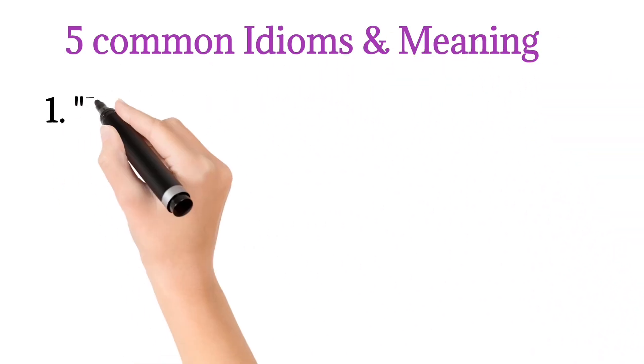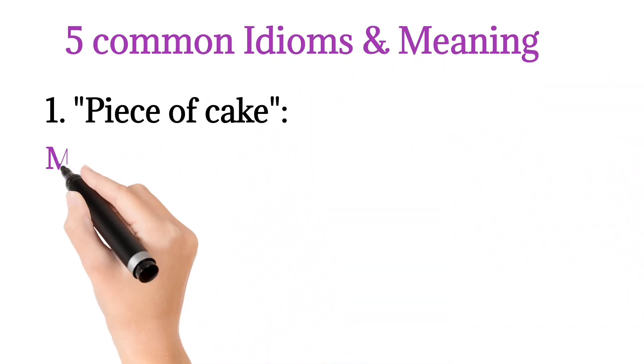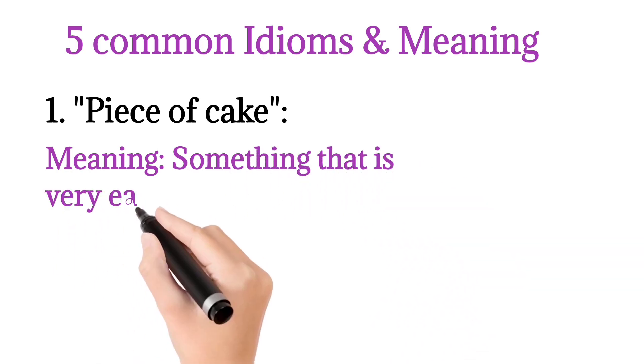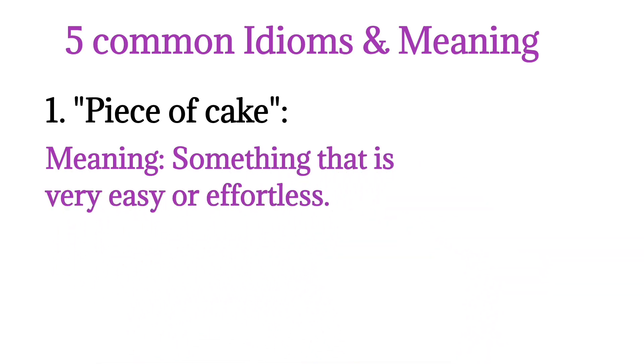5 common idioms with meaning and examples. 1. Piece of cake. Meaning: something that is very easy or effortless.